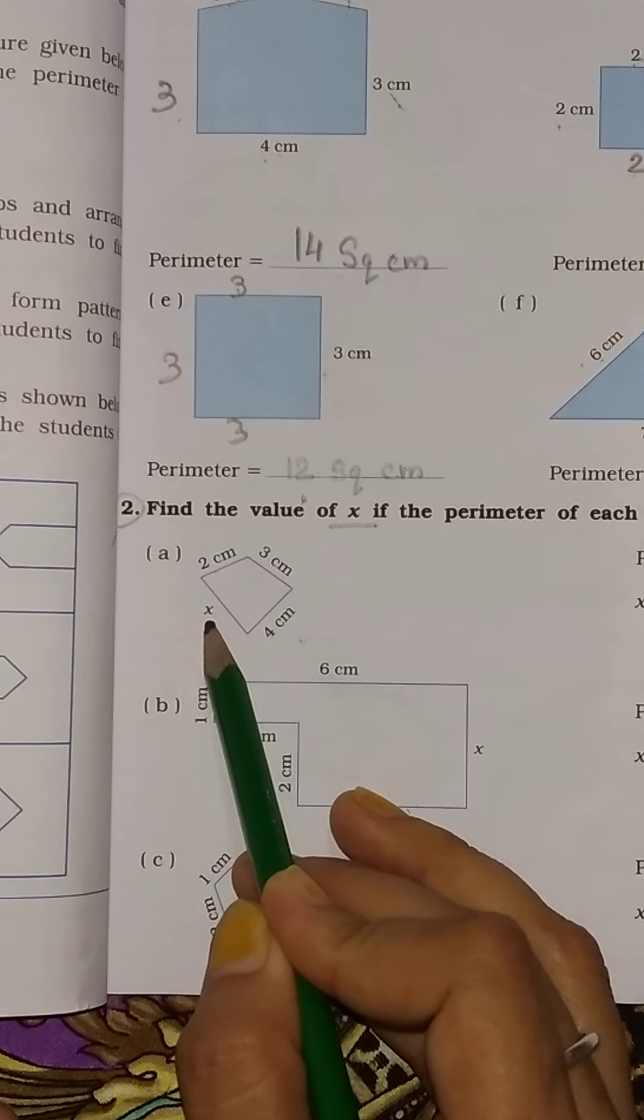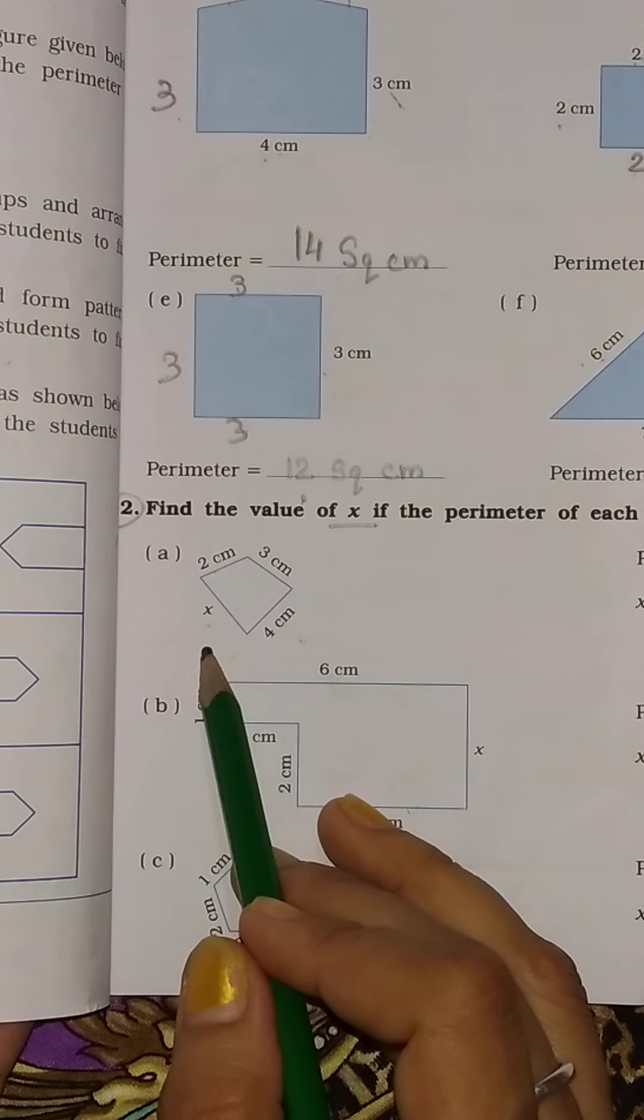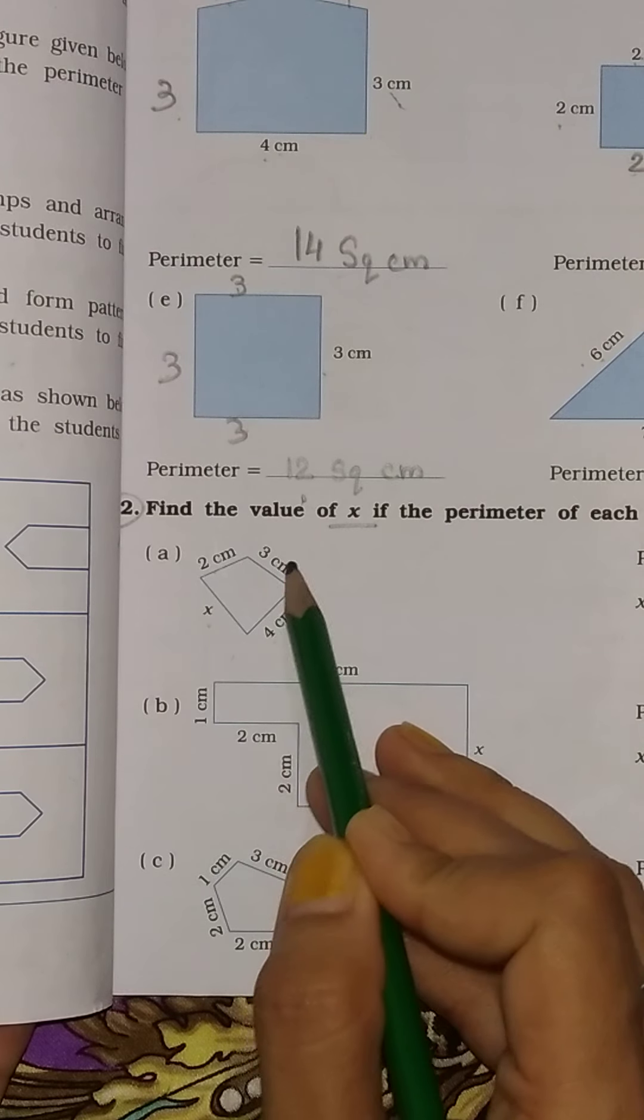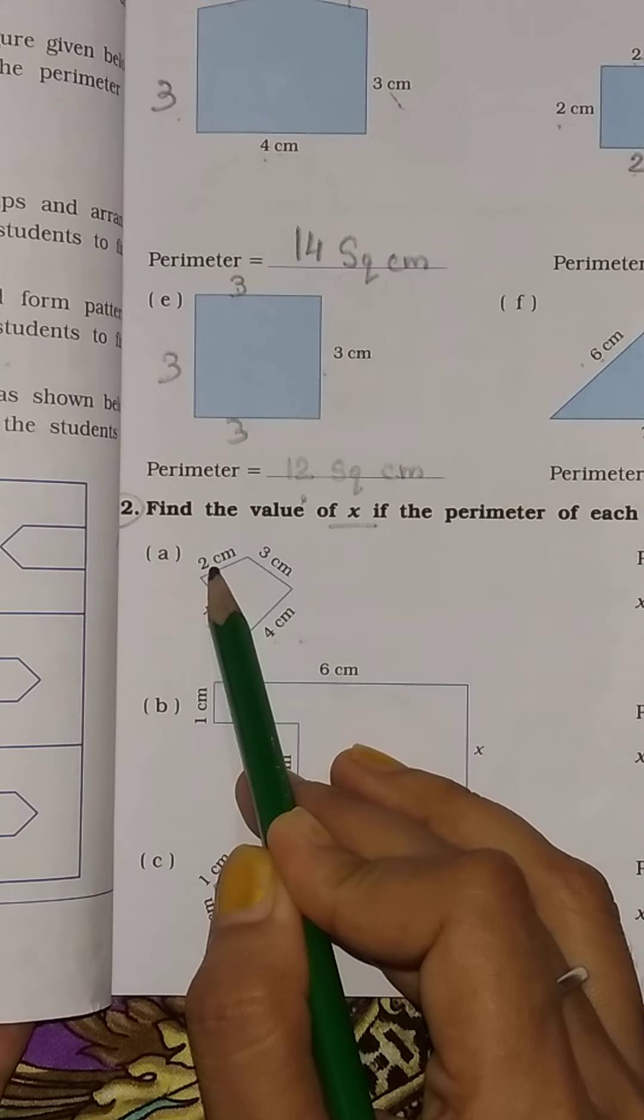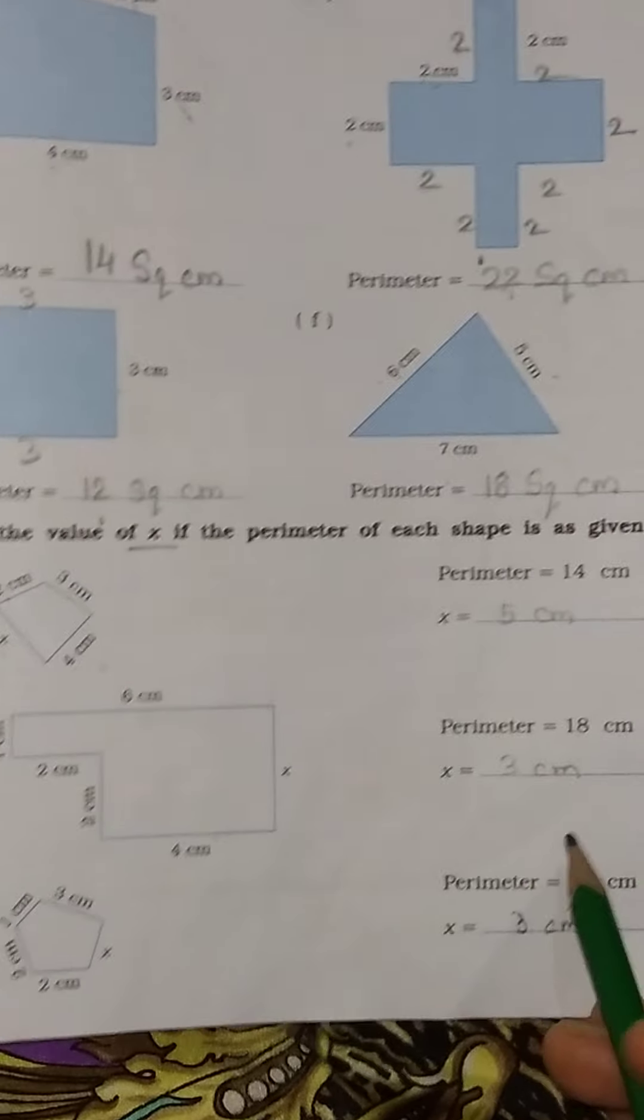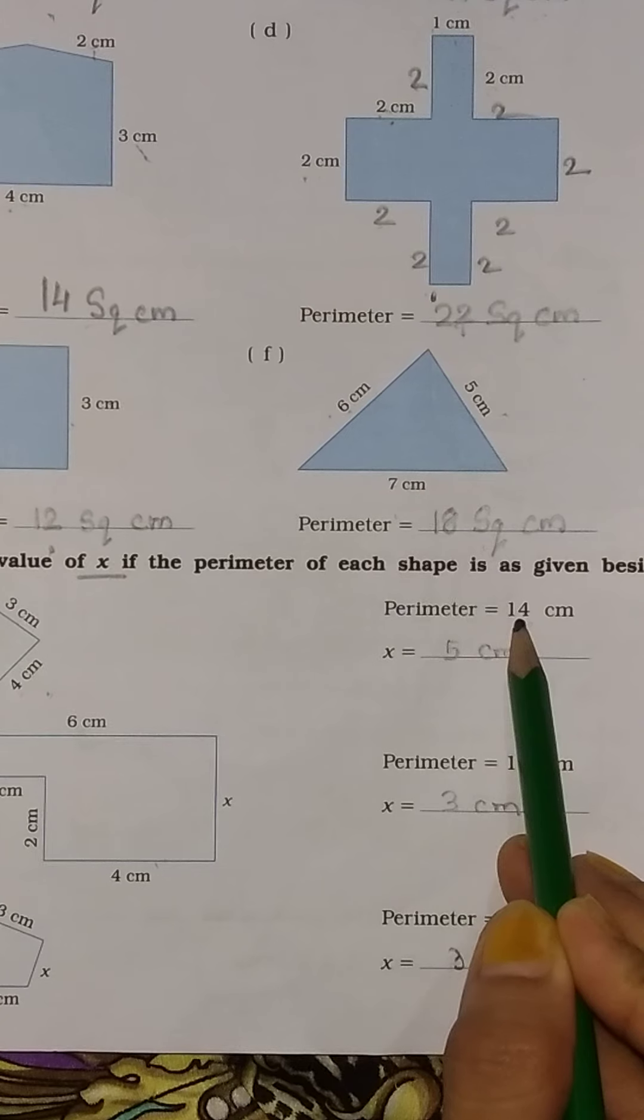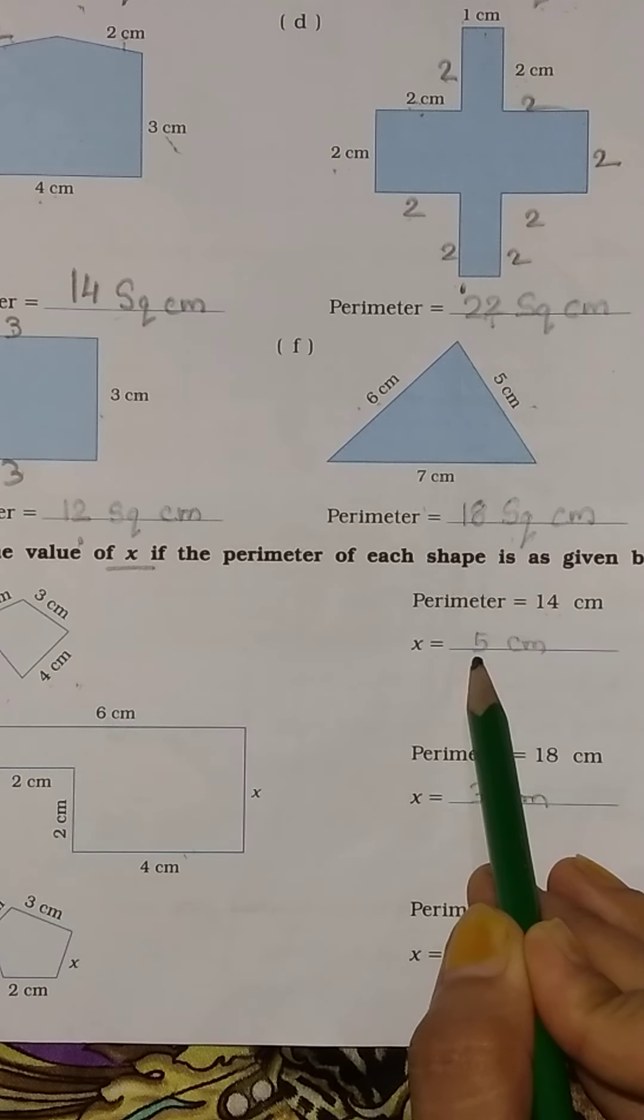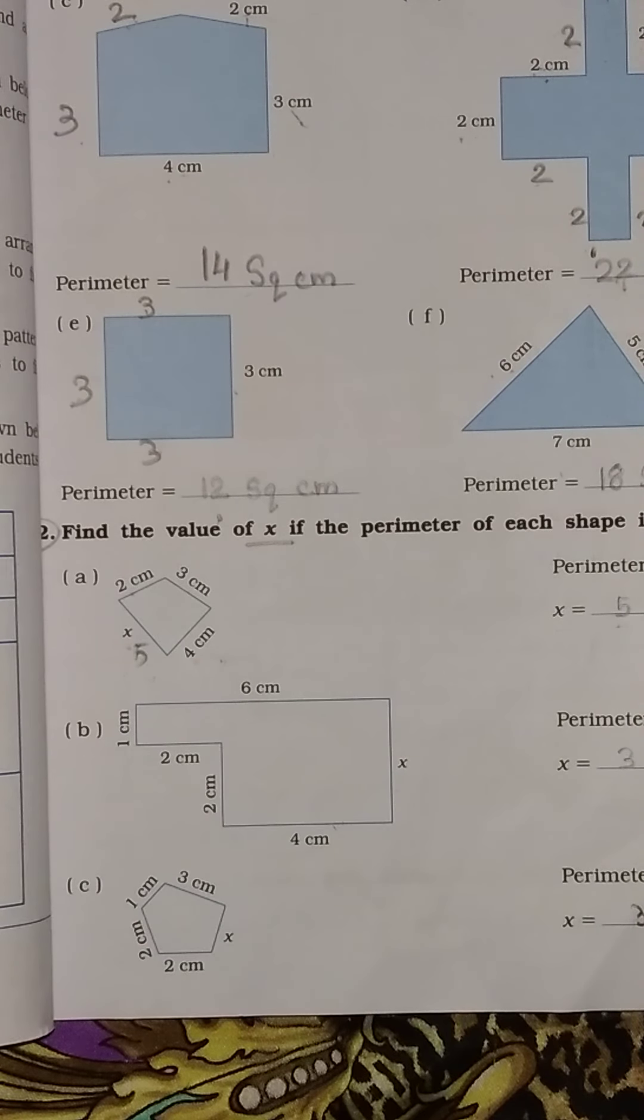We have to find out the x value. This is the perimeter value. If you add, this is 4, 3 is 7, plus 2 is 9 cm. The perimeter given is 14. So 14 minus 9, we will get 5 cm. The x value is 5 cm.